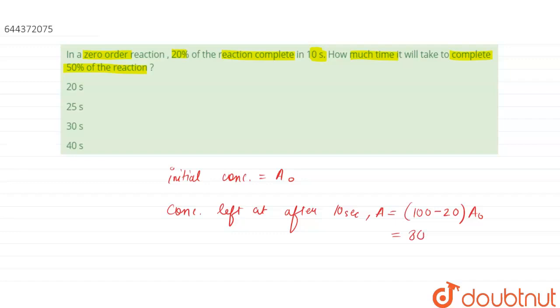This comes out to be 80% A₀, so it will be 0.8 A₀, that is initial concentration.